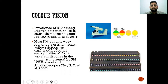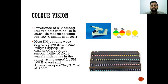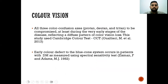For this purpose, we classify neurodegenerative changes into visual function, electrophysiology, and retinal structure. Some studies have found that visual function is affected in diabetic retinopathy, especially at the preclinical stage. Prevalence of impaired color vision among diabetes subjects with no diabetic retinopathy is 39.5% as measured using the FM100 test. Most diabetes patients were found to have tritanopia — blue-yellow defects — explained by higher susceptibility of short wavelength cones. All three color confusion axes — protan, deutan, and tritan — are compromised at the early stage of the disease, reflecting a diffuse pattern of color vision loss.